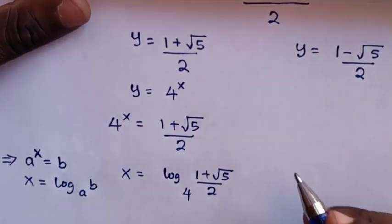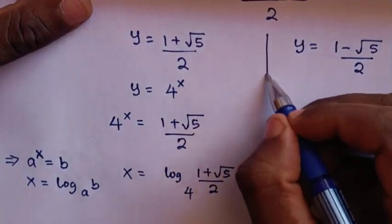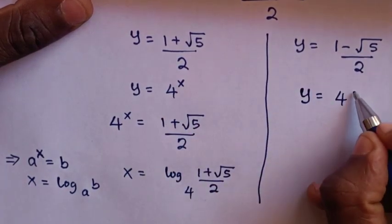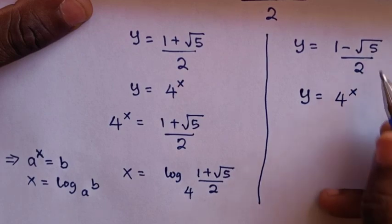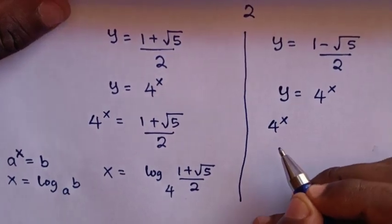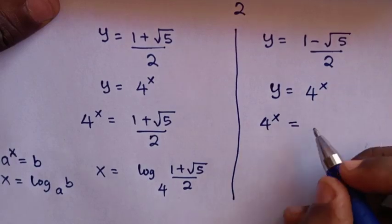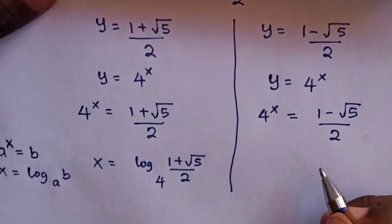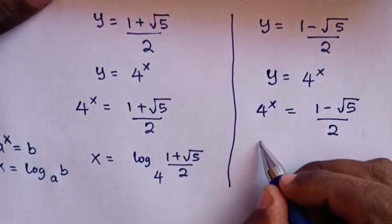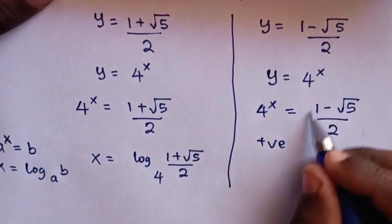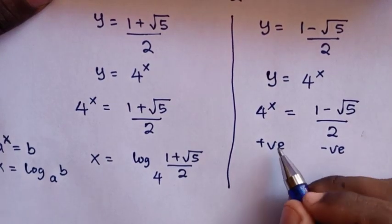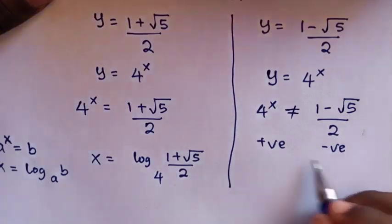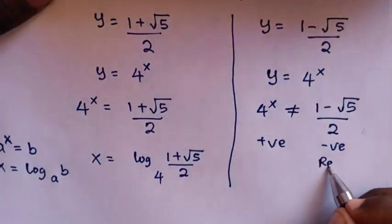For the second solution, 4^x = (1 - √5) / 2. However, 4^x is always positive for any real number x, and (1 - √5)/2 is negative. Since a positive value cannot equal a negative value, this solution is rejected.